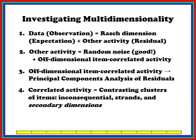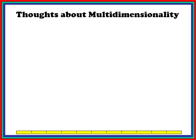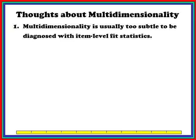The correlated activity will be identified as contrasting clusters of items. Items that correlate together form a cluster. The reasons for these clusters can be accidental and inconsequential, they could be strands like addition and subtraction on an arithmetic test, or they could be secondary dimensions like geography and history on an educational test. If we discover a multi-dimensional set of items, then there is ambiguity about what we are really measuring. Multidimensionality is usually too subtle to be diagnosed with item-level fit statistics, which is why we use principal components analysis of residuals.